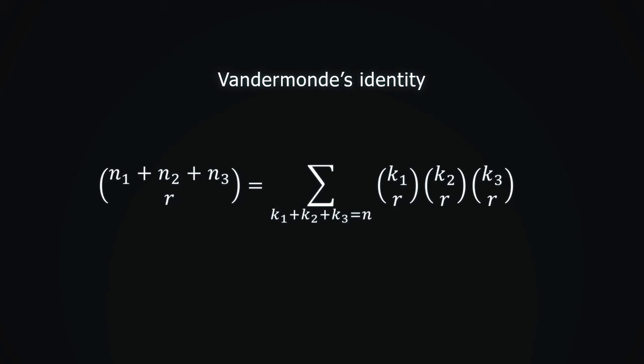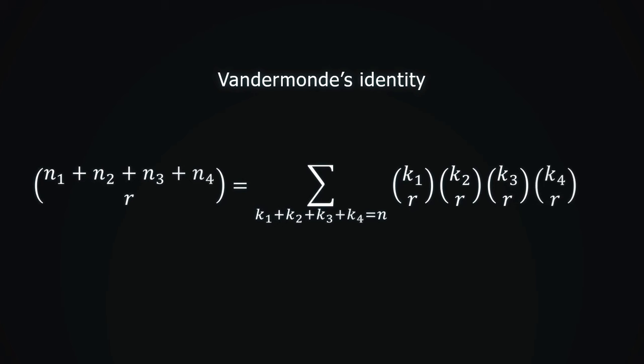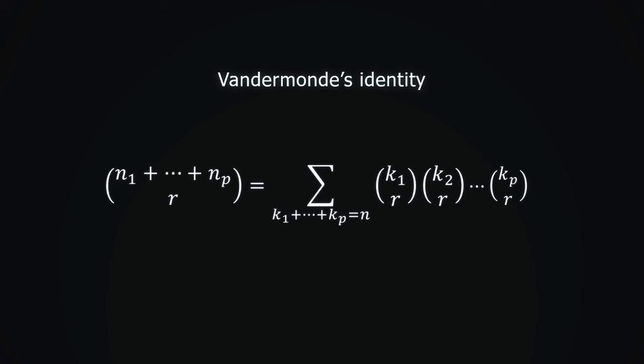For each triplet k1, k2 and k3 whose sum is r, we add n1 choose k1 times n2 choose k2 times n3 choose k3. We can generalize this identity for any number of groups of objects. The next step is 4 groups. You can visualize how the proof for this identity would go. Just imagine adding n4 yellow objects. There is no reason to stop at 4. This is the most general form of Vandermonde's identity.